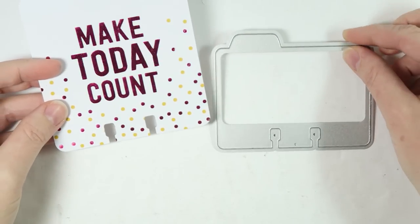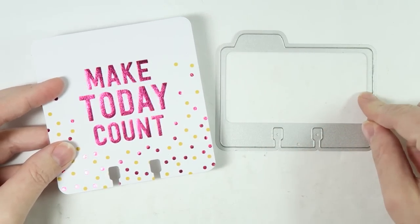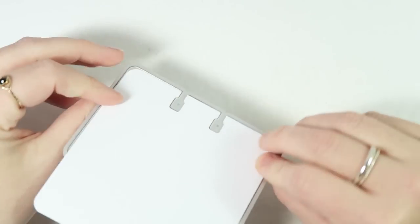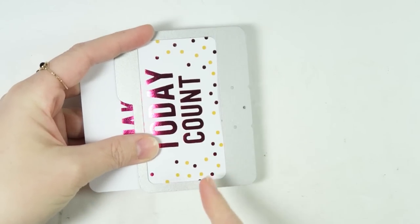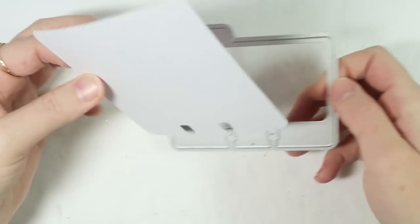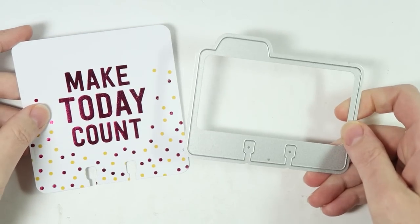The trick to this is to make sure that you do not run the entire card through the die. You just run this bottom section. So you would make your sandwich like this with the cutting part down here. When you roll it through your machine, you stop like right about here so that you just get this cut bottom part. That way you can have a larger card with a smaller die.